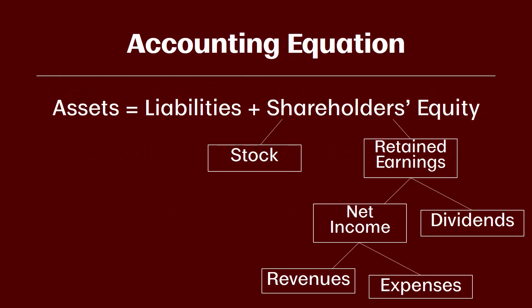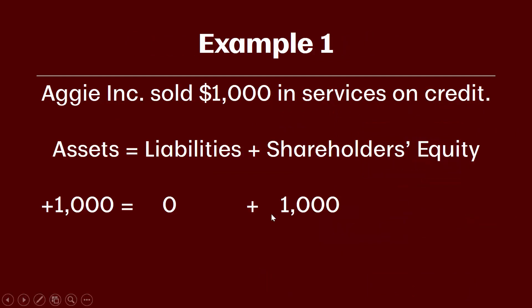Remember the illustration we looked at before where revenues and expenses flow up into net income and then up into retained earnings, which goes into shareholders' equity. So in this example where we recorded $1,000 in revenue, those revenues flow all the way up into shareholders' equity — that's why the $1,000 increase in revenue shows up as an increase in shareholders' equity. The $1,000 increase in assets is coming from accounts receivable.